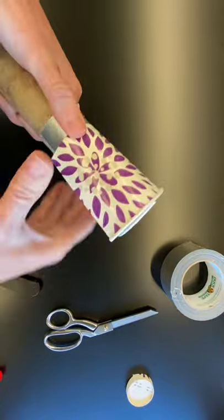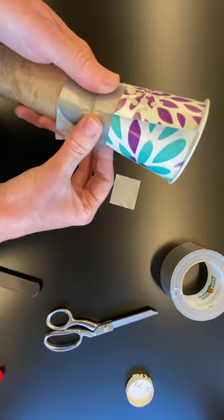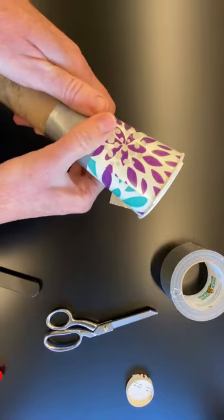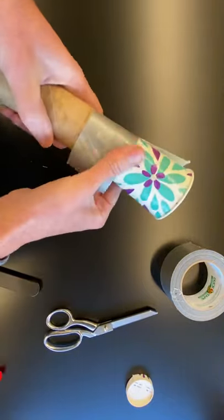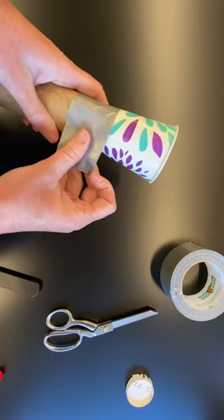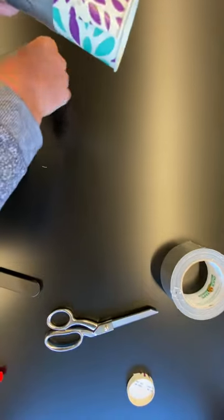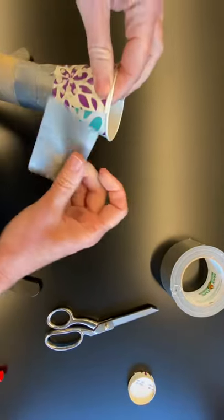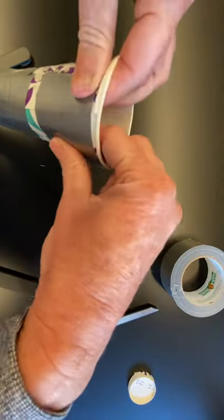I wrap around the bottom and secure it with another piece of tape like that. Then I take tape and put it all the way around so that I secure the whole bottom of the cup to the paper towel roll. And then finally, where I sliced it down the side, I'm going to secure that there.